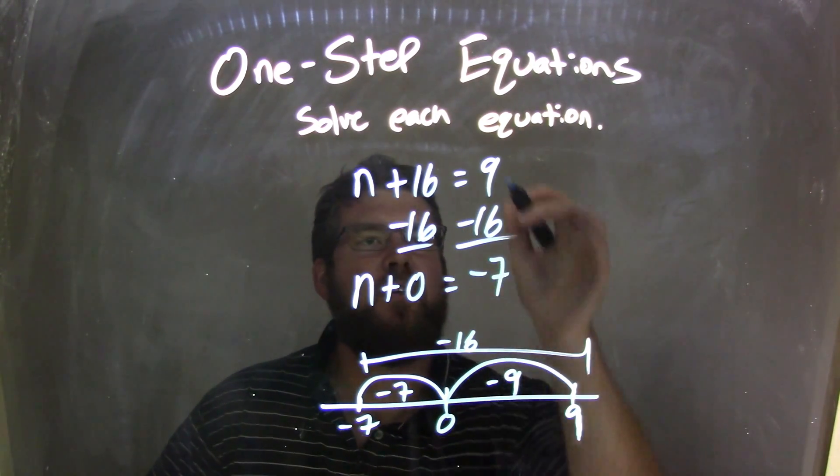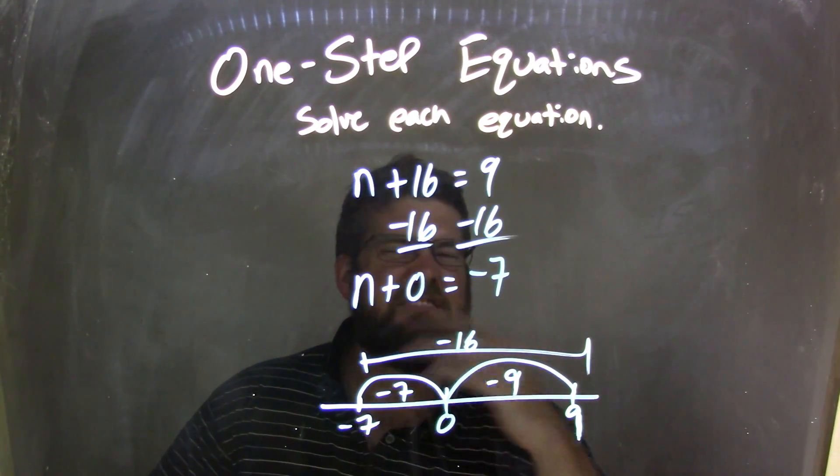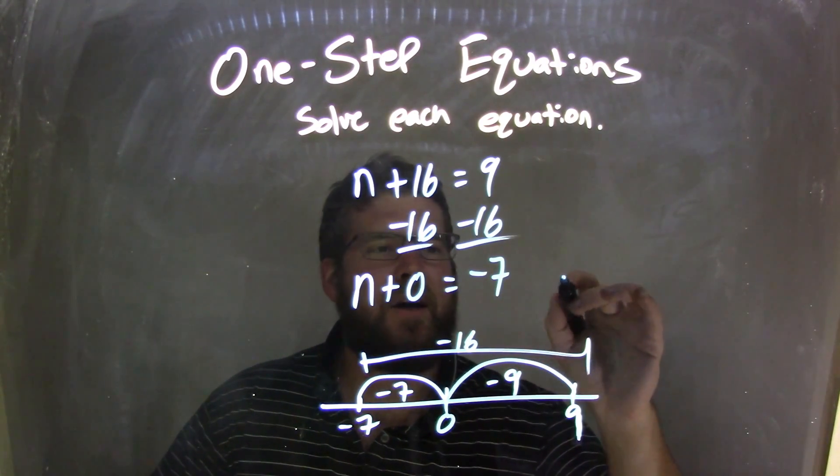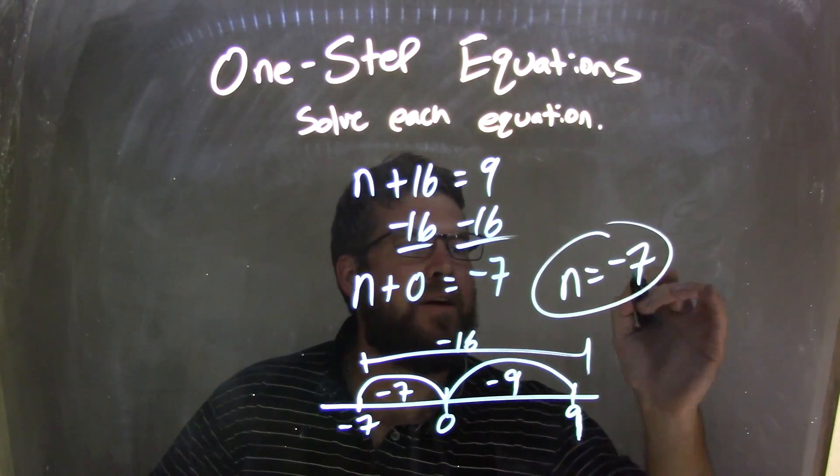And now, n plus 0 equals negative 7. Don't need that anymore. I'm going to write it here on the side. I don't need the plus 0. So, now I have n equals negative 7, and that is my final answer.